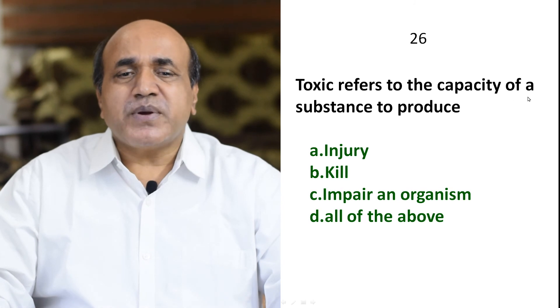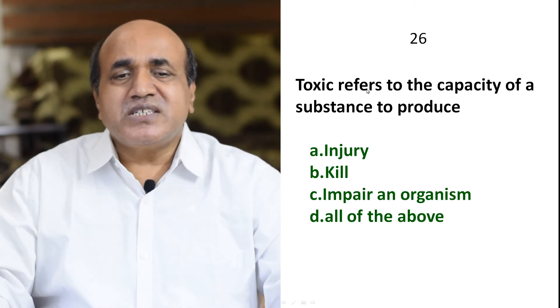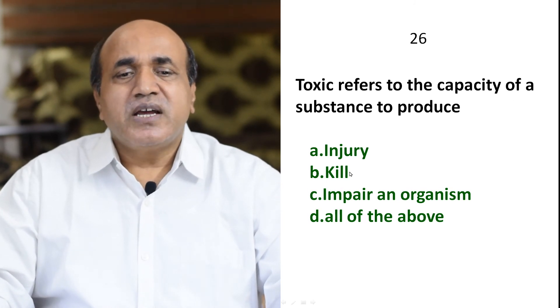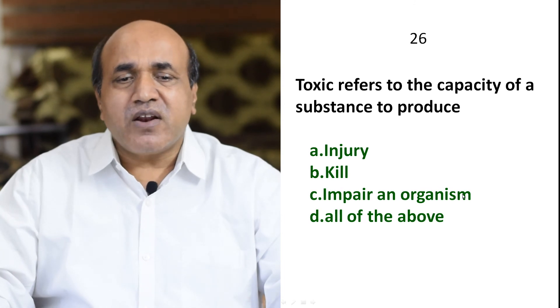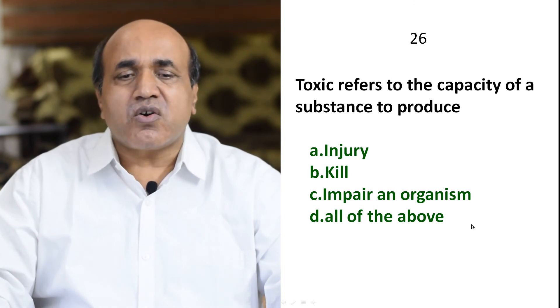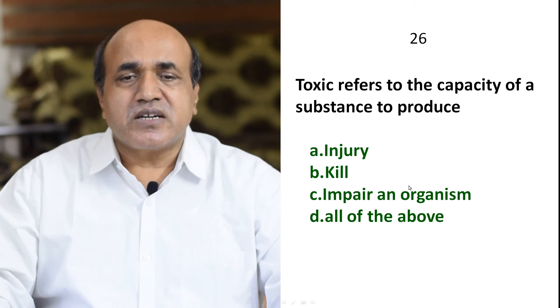Question 26: Toxic refers to the capacity of a substance to produce — injury, kill (death), or impair an organ. All of these — injury, killing, and organ failure — can result from toxicity. So D — all of the above — is the correct answer.